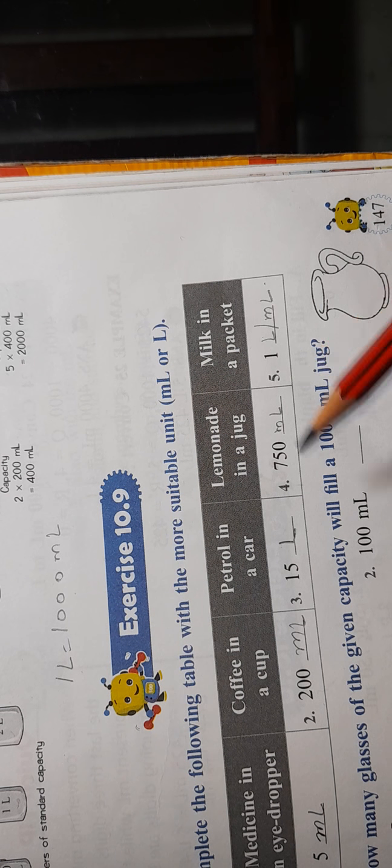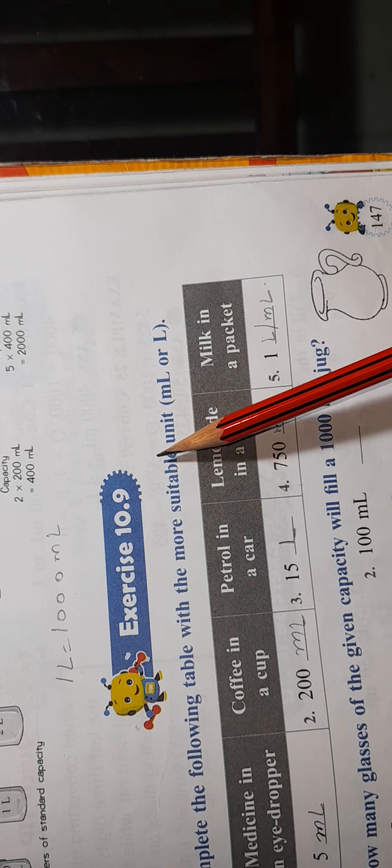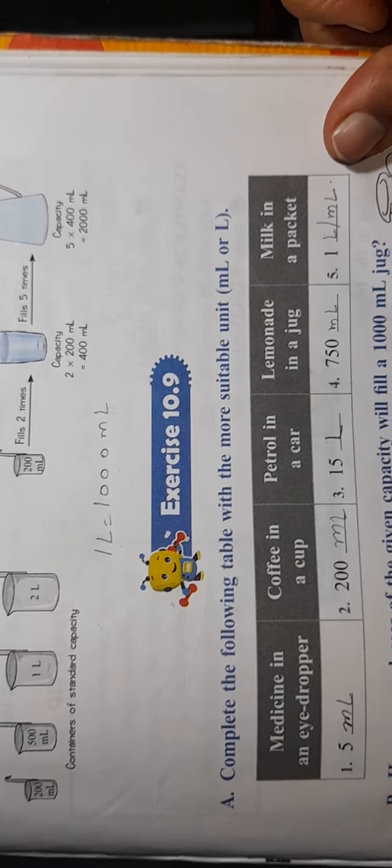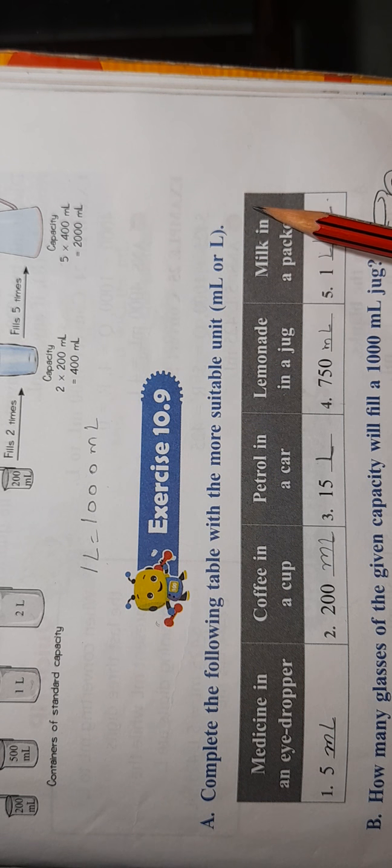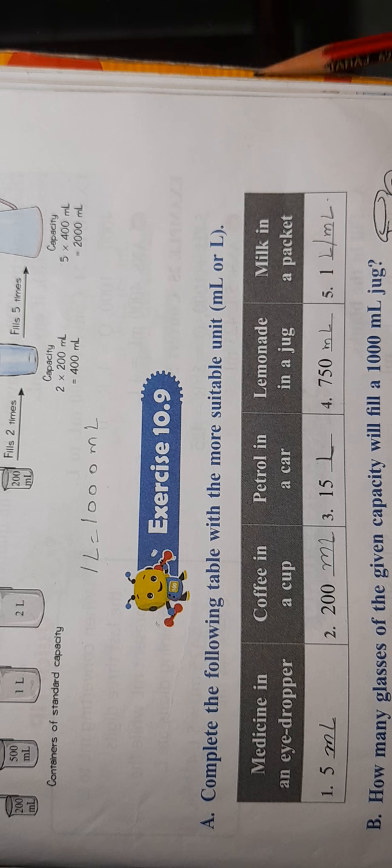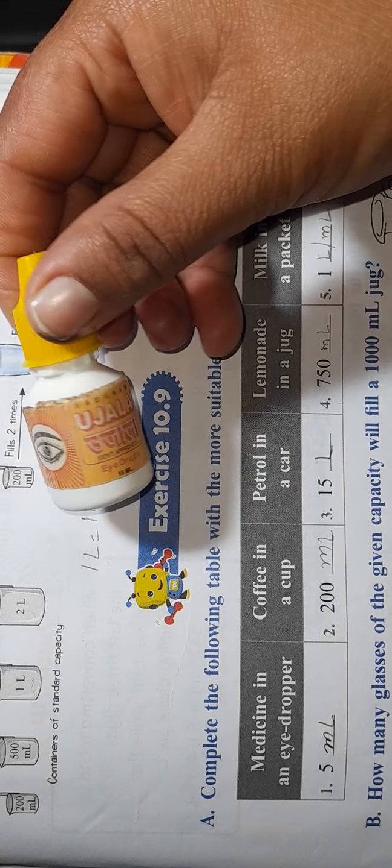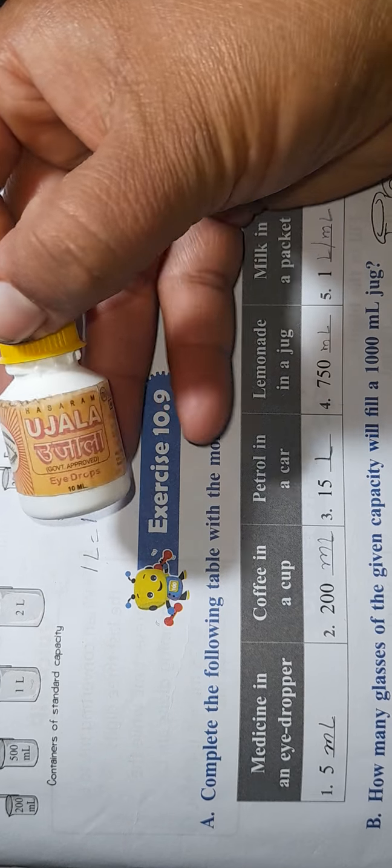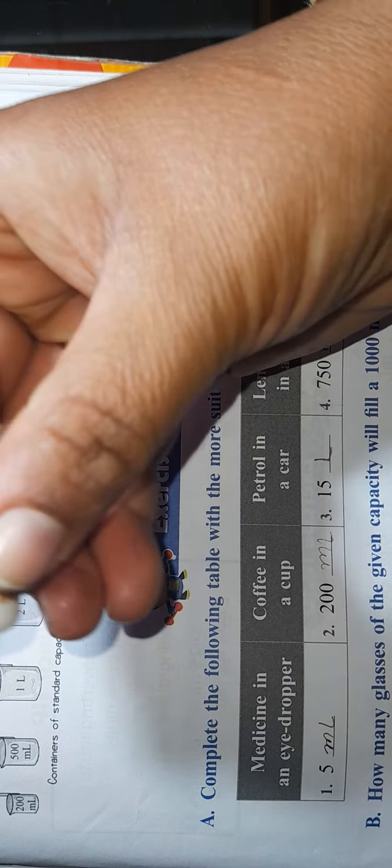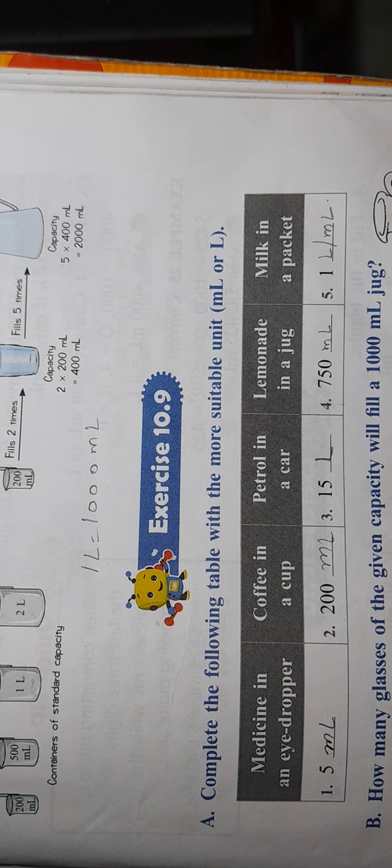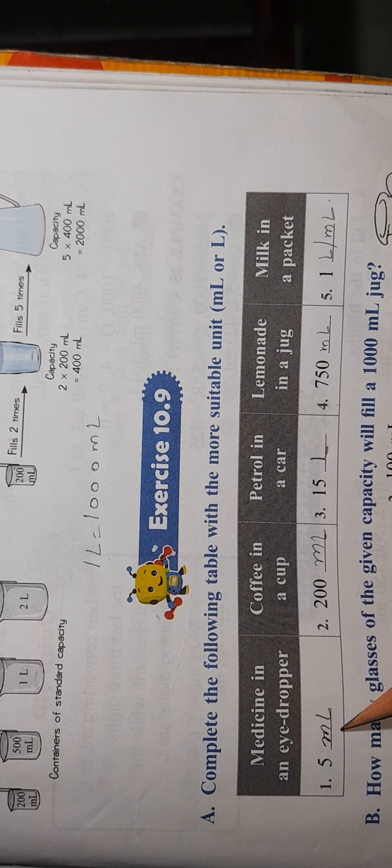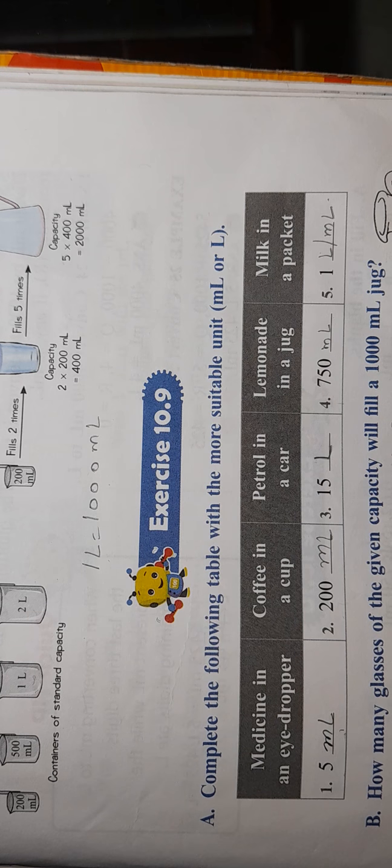Now let's do Exercise 10.9. Your question 1 is: complete the following table with the more suitable unit, milliliter or liter. So medicine in an eye dropper, which is a small one, look at it here. This is the capacity that is written here, you can see that it is 10 ml. So medicine in an eye dropper we will measure in ml. I've got this medicine, what is its capacity? It is 10 ml which is mentioned here.